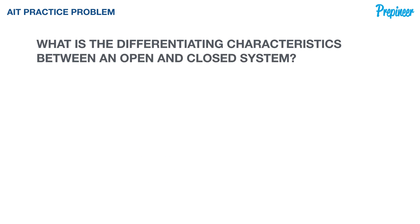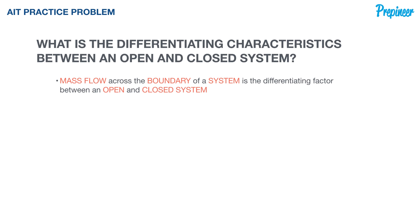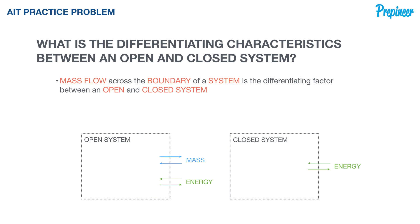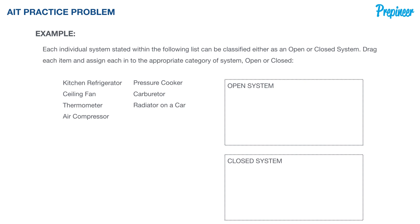So what differentiates an open and a closed system? Simply: mass flow across the boundaries. The boundary of an open system allows transfer of both matter and energy. The boundary of a closed system allows transfer of energy as heat and work, but not of matter between it and its surroundings. Rallying back to our list, we'll determine where each system falls based on these characteristics.